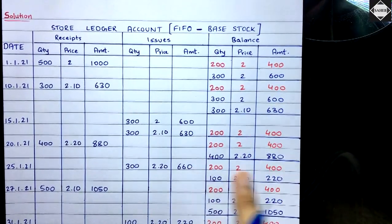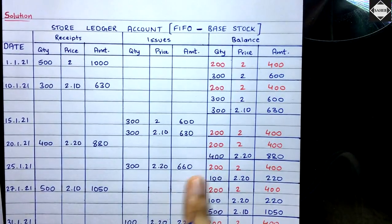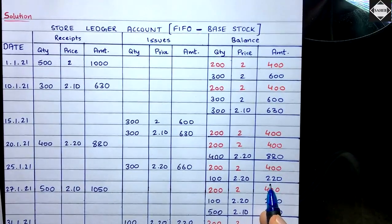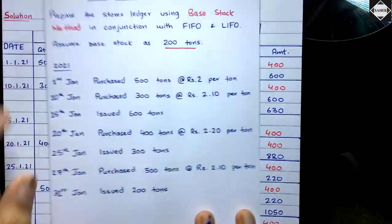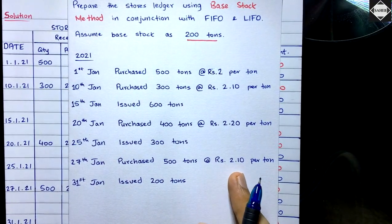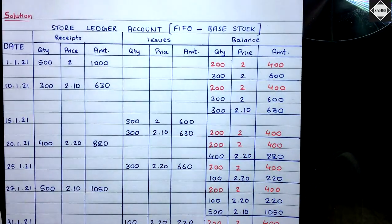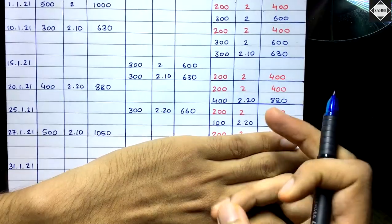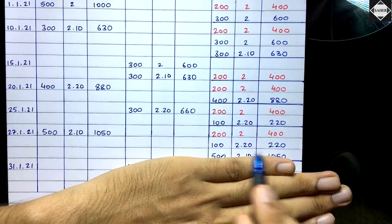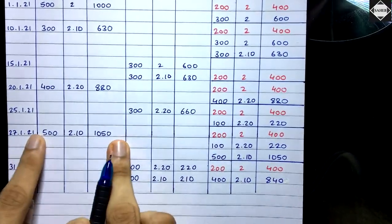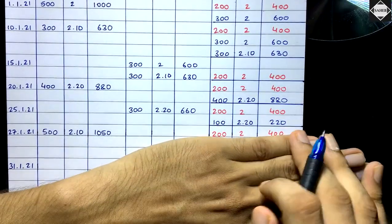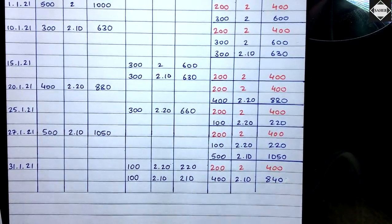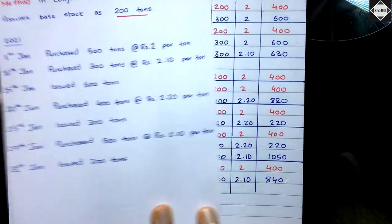The red ink base stock remains as is. From the 400 free quantity, we sent out 300, so the remaining is 100 × ₹2.20 = ₹220. On 27th January, purchased 500 tons at ₹2.10 per ton. Again draw a line, copy balance: 200 × ₹2 = ₹400 and 100 × ₹2.20 = ₹220, then add new purchase: 500 × ₹2.10 = ₹1,050.